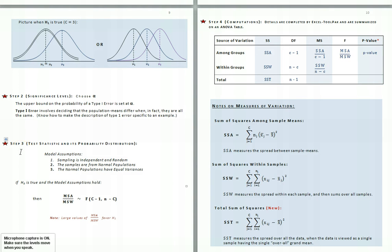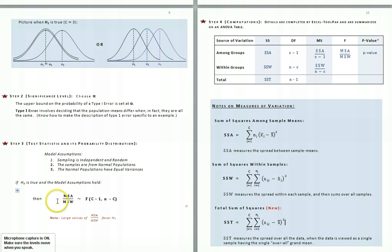The third step is choosing a test statistic and its probability distribution. This step also requires us to state the model assumptions, which are the same as in our two-population example: sampling is independent and random; samples are from normal populations; and the normal populations have equal variances. If these model assumptions are true, the appropriate test statistic is MSA over MSW, where MSA measures the amount of between-sample mean variation and MSW measures the amount of within-sample variation.